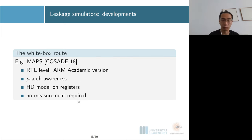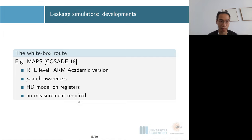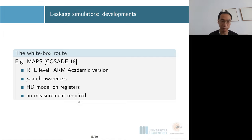You can also take the white-box route — for example, what was done in MAPS in 2018, which uses the academic version of the RTL code. In this case you know exactly what's happening in the microarchitecture. However, they chose not to include everything; they only focused on register bit flips, capturing only register Hamming distance. The advantage is you don't need to guess about the microarchitecture and you don't need any measurements.